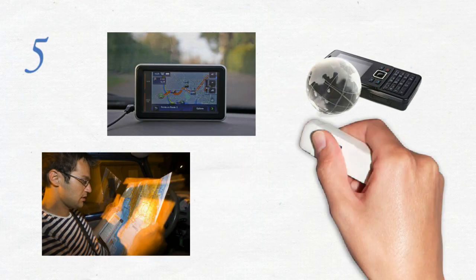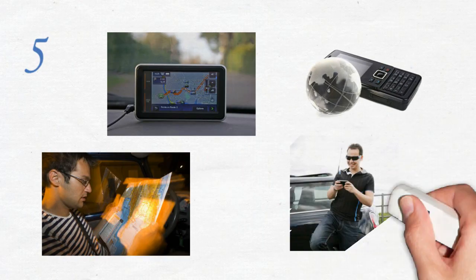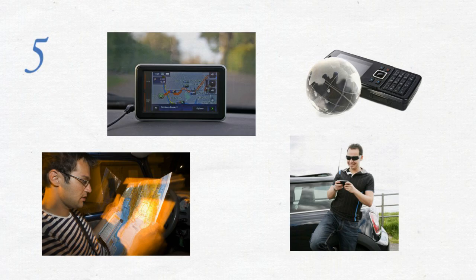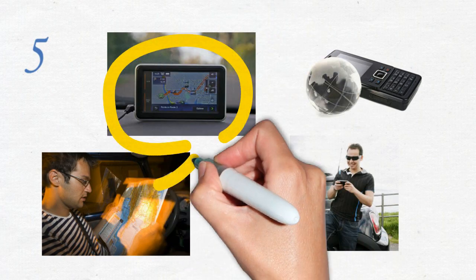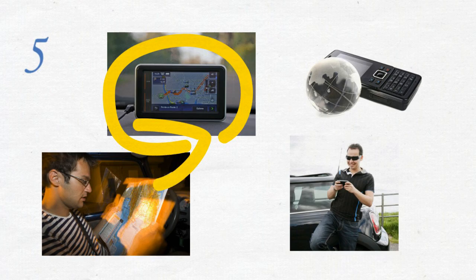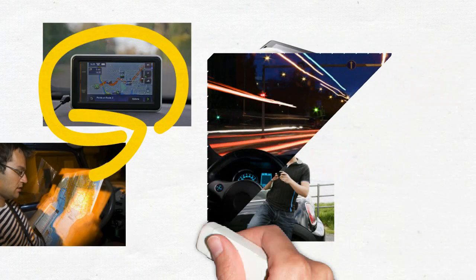Also, whenever you take your eyes off the road to look at a navigation system, you are refocusing from far to near and back again. This interferes with your ability to spot a hazard and react in time.